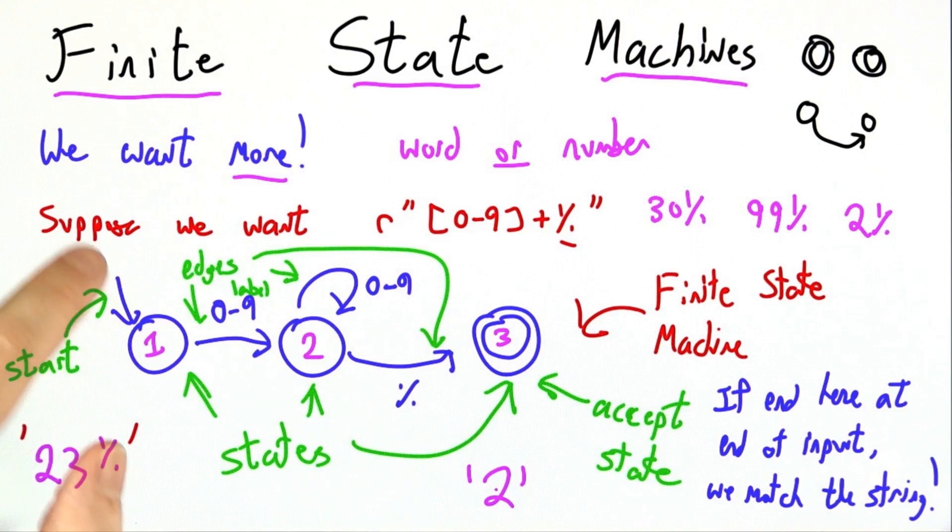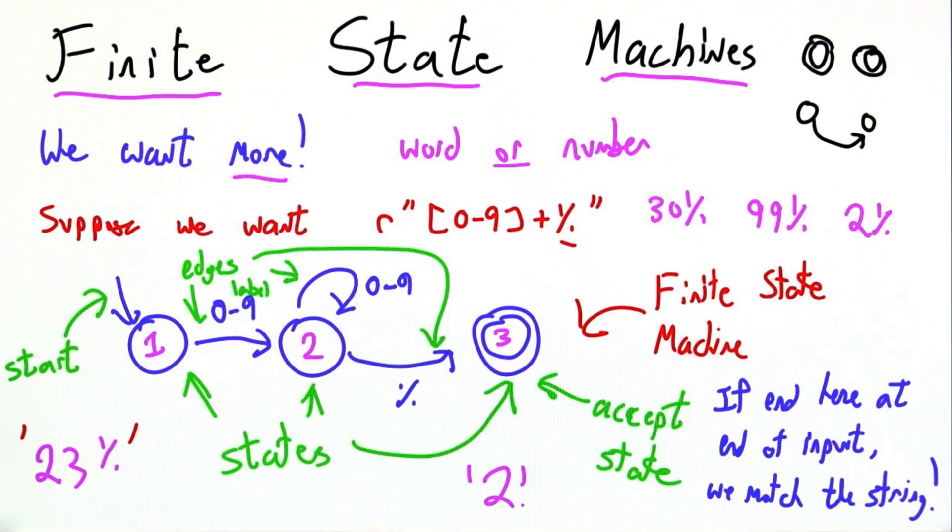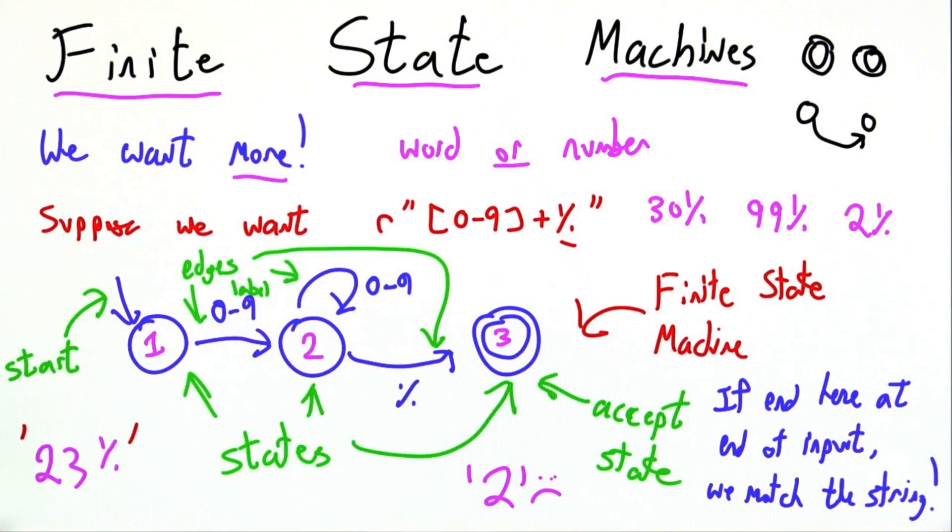Let's try just the string 2. We start in the start state. We see a 2, so we move over here, and then we're done. We ran out of input, but we're not in an accepting state. Our finite state machine rejects this, just like our regular expression would.